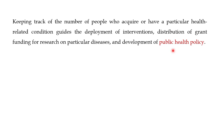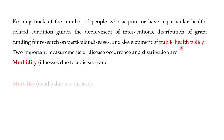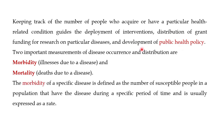There are two important measurements of disease occurrence and distribution. The first is morbidity, which simply means illness due to a disease. The morbidity of a specific disease is defined as the number of susceptible people in a population that have the disease during a specific period of time, and is usually expressed as a morbidity rate.